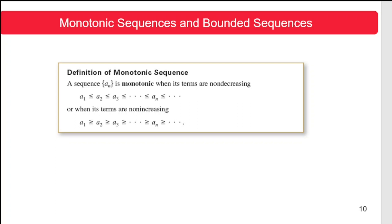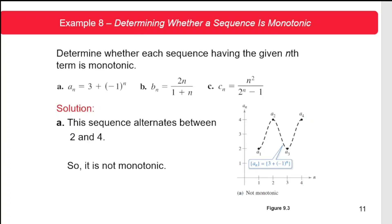A sequence denoted by a sub n is said to be monotonic when its terms are non-decreasing — that is, a₁ ≤ a₂ ≤ a₃ and so on — or when its terms are non-increasing — that is, a₁ ≥ a₂ ≥ a₃ and so on.